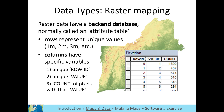Raster data have an attribute table with specific properties: a unique ID for each type of cell or pixel, the value of that cell, and the count of other cells with the same value. In this example, the row with ID 0 includes cells that have an elevation value of 1 meter, and there are 1,399 cells with this value.